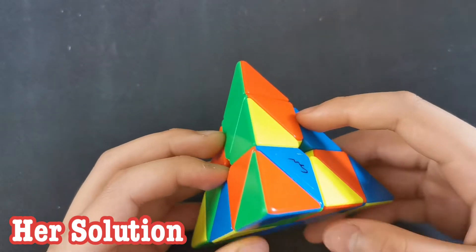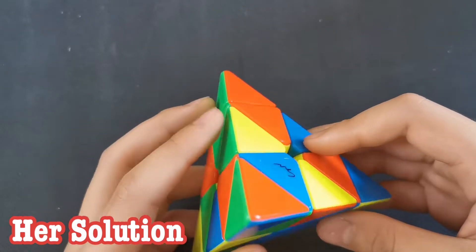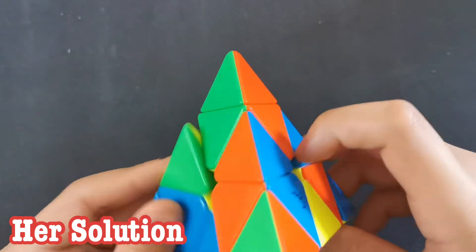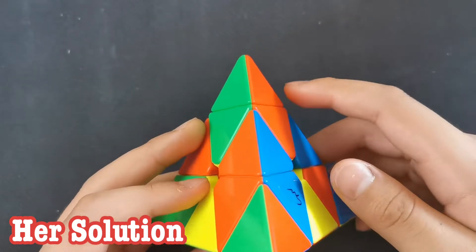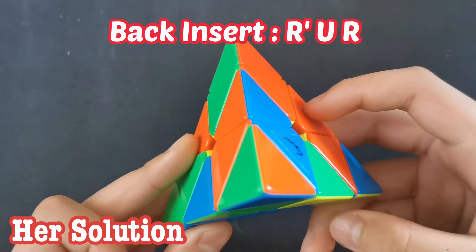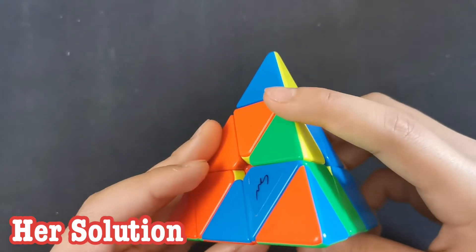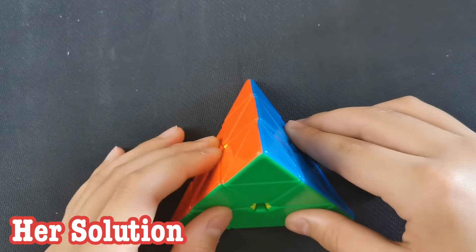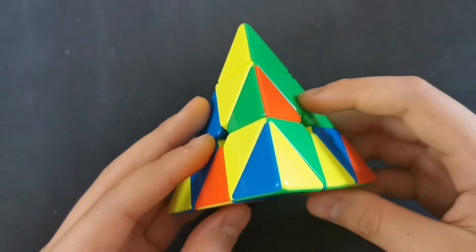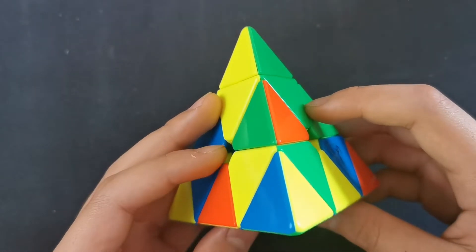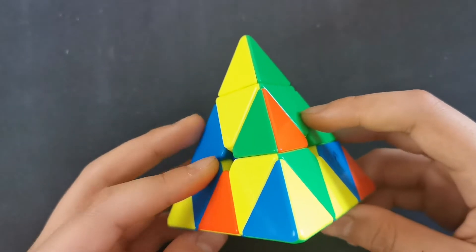You solved the center first with U, R to take that one out first, and then you inserted this one. Oh sorry, you did the tip, then you inserted this one. Inserted this one to the back while preserving this with U, R', U, R, and then you kind of rotated, U, sledge, and then two tips.